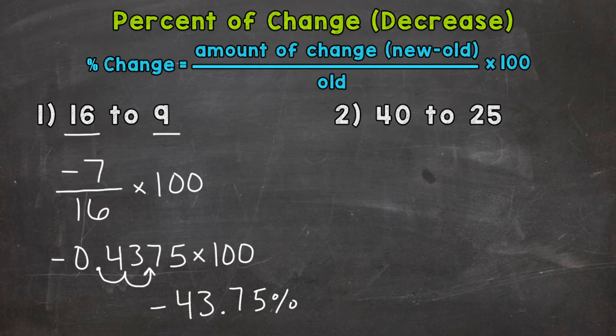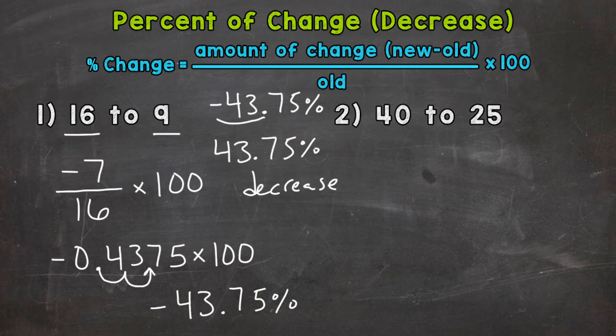So we can express this answer in two ways. We can say negative 43.75 percent. And again, that negative represents a decrease. Or we can write 43.75 percent decrease. So here is one way to express our answer. And here is the other. So using a negative to represent the decrease or writing decrease out.